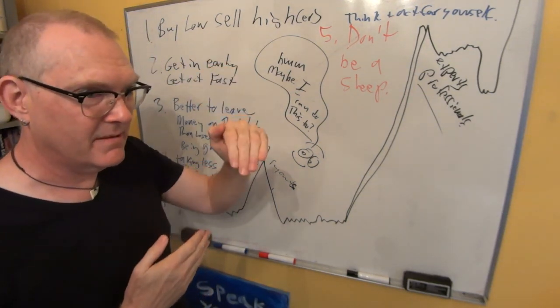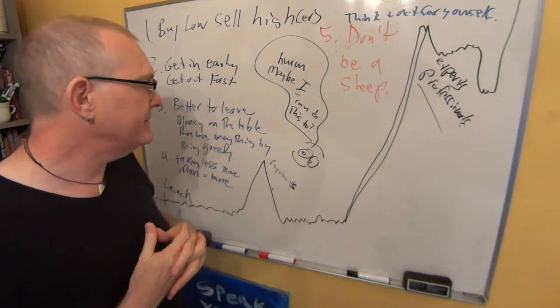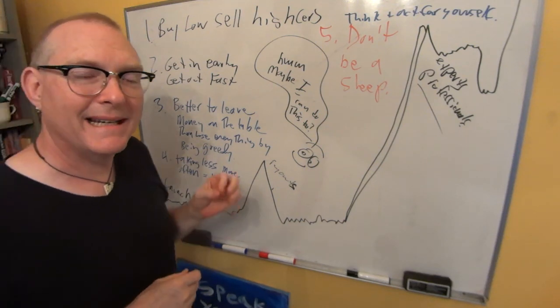Right now, Bitcoin's having a little bit of a retracement. It may go to $5,000. It probably will, but not today.